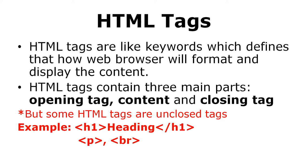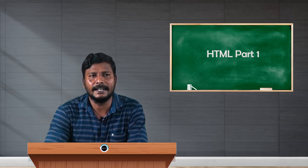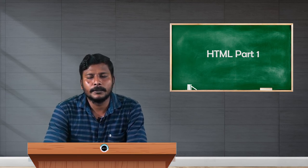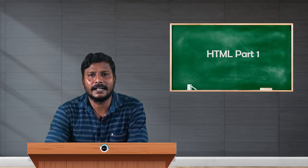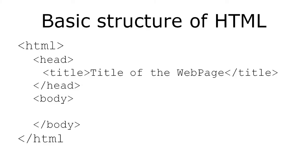Some HTML tags do not have closing tags — these are called unclosed tags. For example, the paragraph tag 'p' does not need a closing tag; you can directly start the next paragraph with 'p'. The line break tag 'br' is used to move to a new line and also needs no closing tag. For a heading tag like 'h1', however, it must be closed with a closing tag. All HTML tags are placed within angle brackets, and closing tags use a forward slash before the tag name.